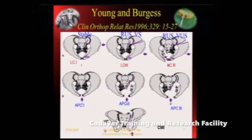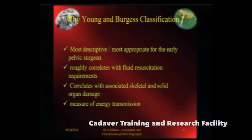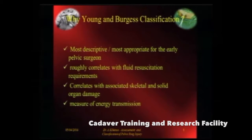If you have a lateral compression injury, then the obvious thing is there is a higher incidence of solid or visceral organ damage because the pelvis is going to collapse or compress on one side. You may have an APC-type configuration on the other side, which is why it is sometimes very difficult to say what we are dealing with. This is perhaps the most logical classification system today. It is descriptive, it correlates with the quantum of fluid resuscitation, with associated skeletal and solid organ damage based on lateral compression type, and is a measure of the quantum of energy that has gone through the pelvis.